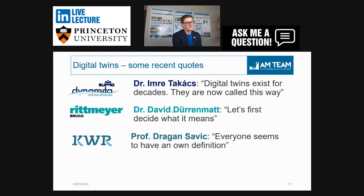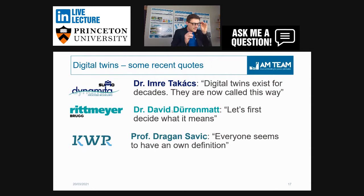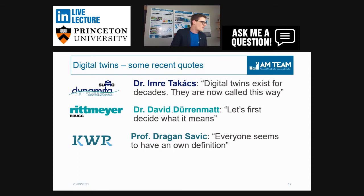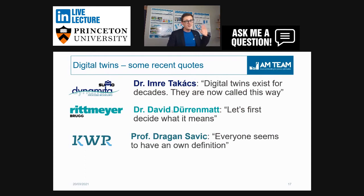Digital twin is a word you hear all over the place — it's actually a strong marketing term used everywhere. People I've recently spoken to point out that digital twins actually exist for decades; they are now just called this way. Imre from Dynamita says the ASM models were introduced in the 1980s — if you have an ASM model and a real plant, you already have a digital twin. The question is whether it's operating in real time in parallel with the real plant.